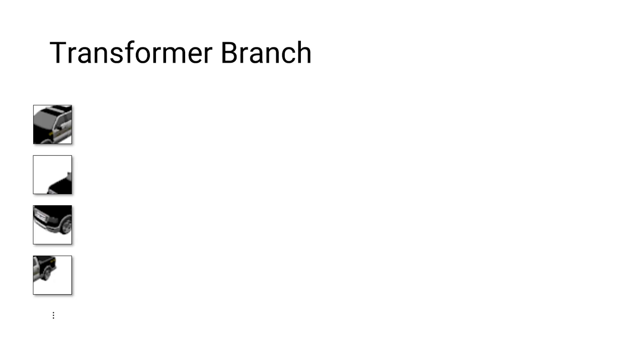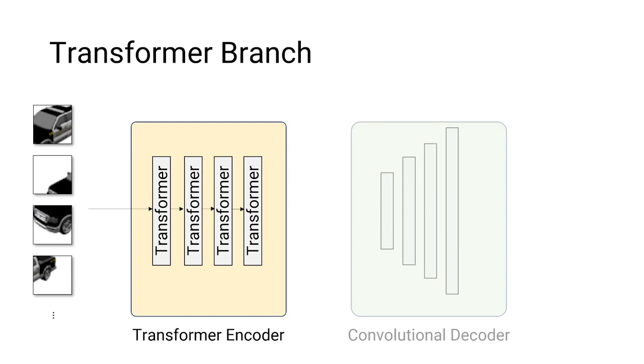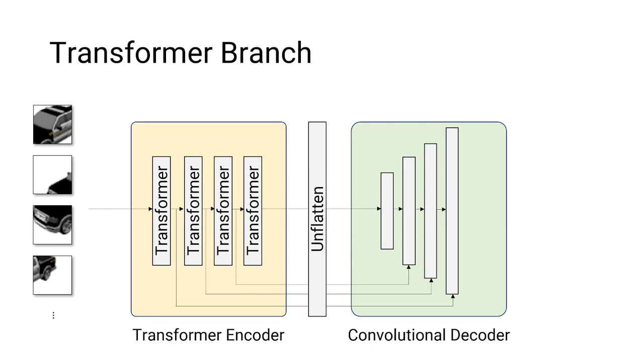The tokens are then fed into the transformer encoder to generate sets of latent codes. Next, we have the convolutional decoder module, which is composed of multiple convolutional layers. As we didn't change the spatial ordering of the latent code, it can be unflattened back to image patches and reassembled into images. We feed these images into different layers of convolutional decoder and collect the final output as multilevel feature maps.